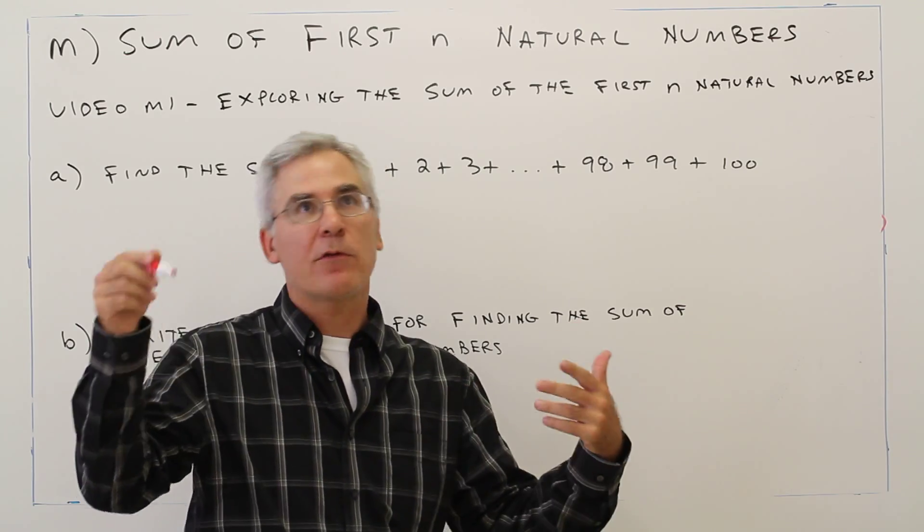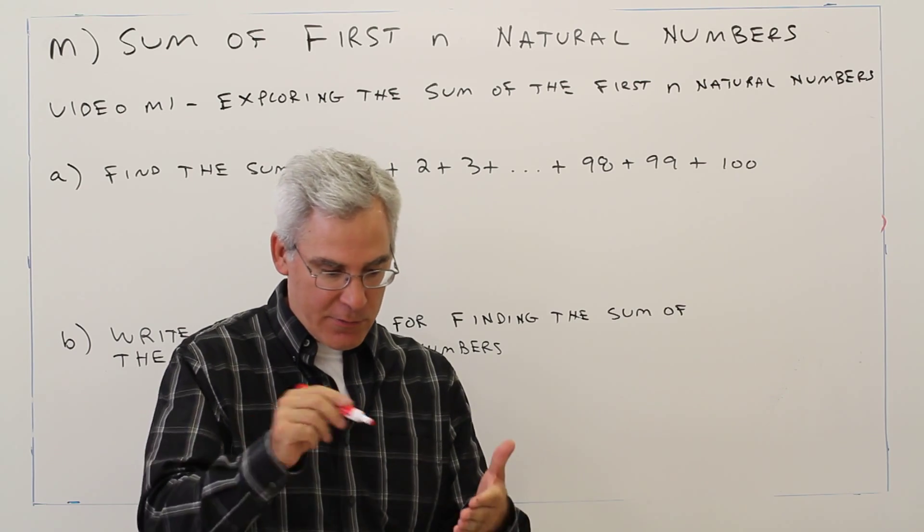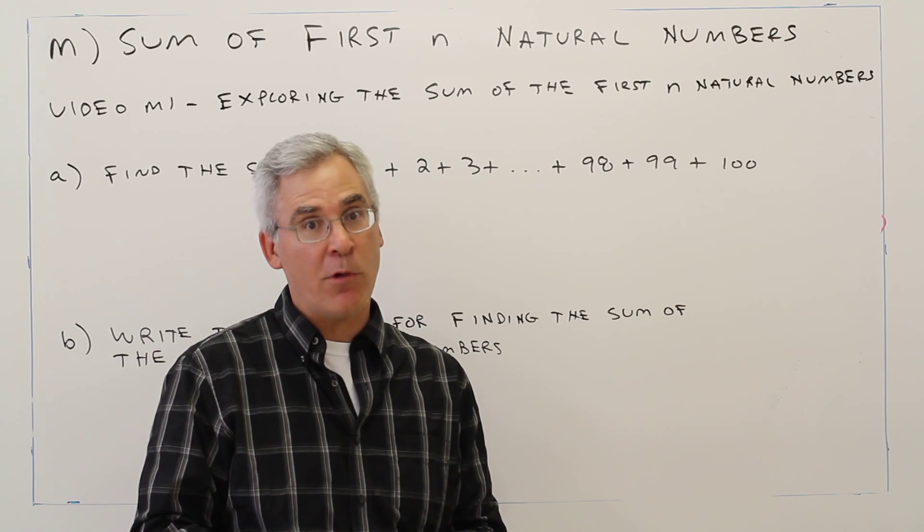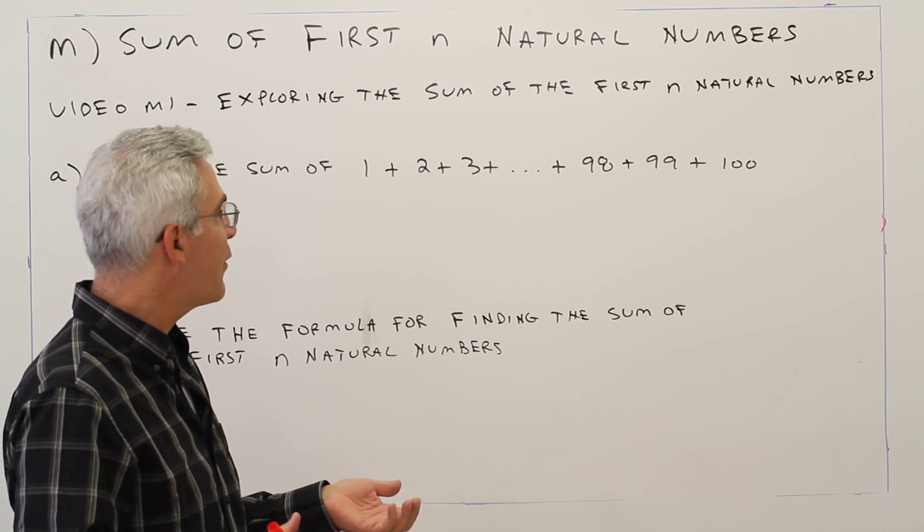And most people did one plus two plus three and just did it that way. Gauss, within 10 seconds, used his slate and said there it lies. And it was the correct answer. The teacher was upset. But anyhow, here's what Gauss did.